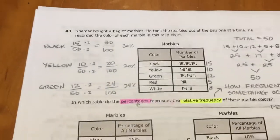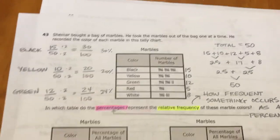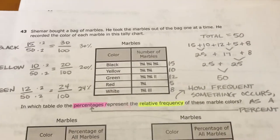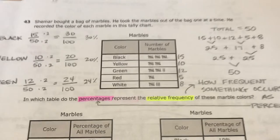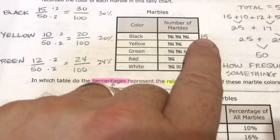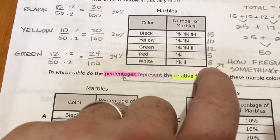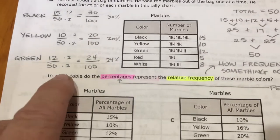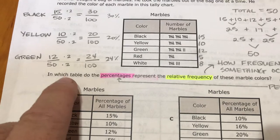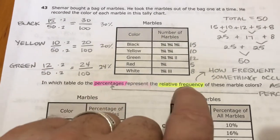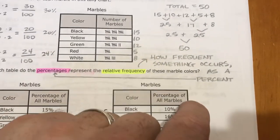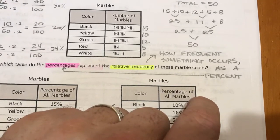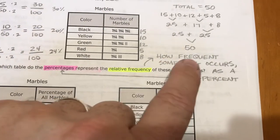All right, 43. It's saying that this person bought a bag of marbles. He took the marbles out of the bag one at a time, he recorded the color of each marble in his tally chart. So I counted up the tally marks and listed a total for each one. And then the question says, in which table do the percentages represent the relative frequency of these marble colors?